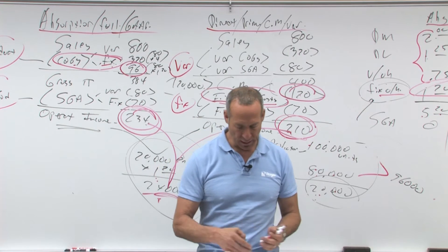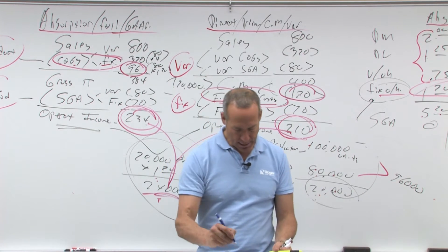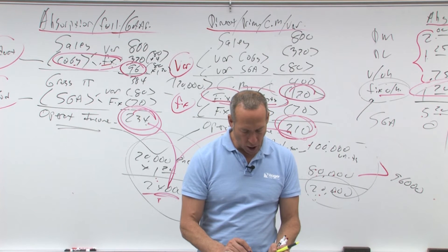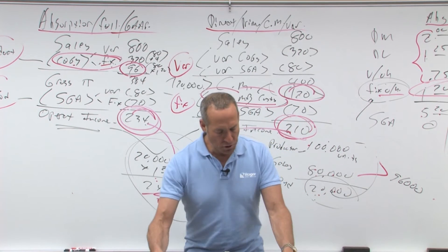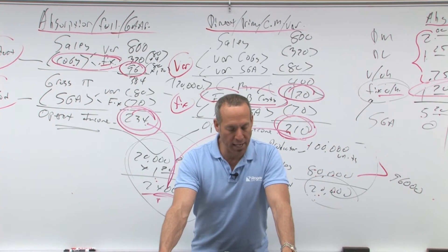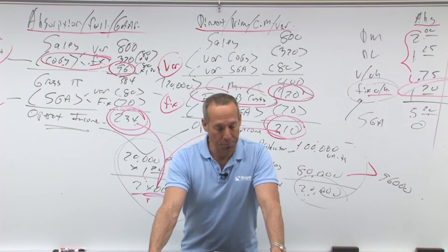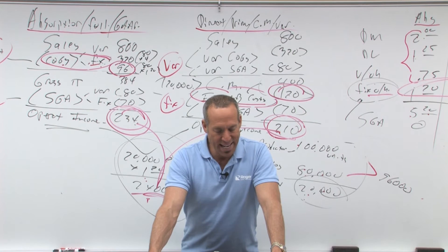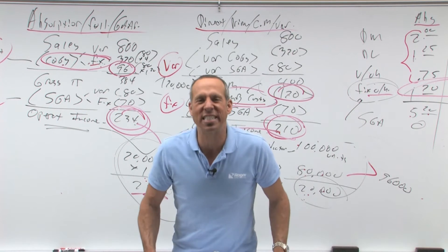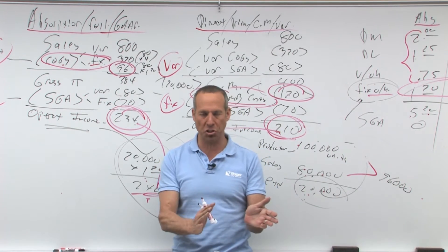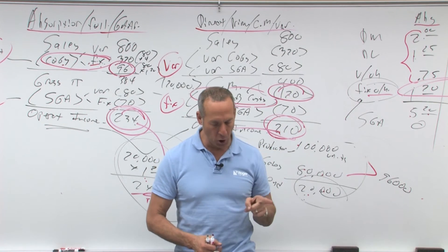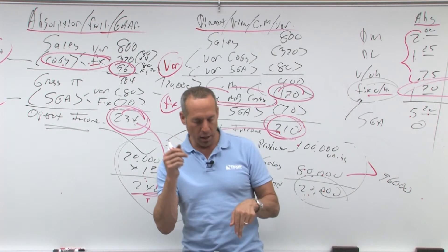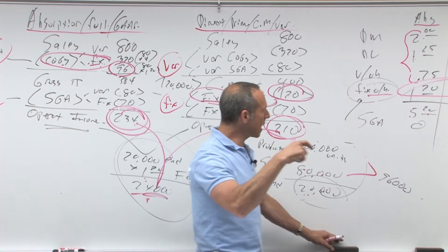Question number ten — read the last sentence first. It asks: if Kilo uses absorption costing rather than variable or direct costing, the result would be a higher pre-tax income of how much? At the end of Kilo's first year of operations, a thousand units of inventory remained on hand. Variable and fixed manufacturing cost per unit were $90 and $20 respectively — meaning variable is $90 per unit and fixed is $20 per unit.